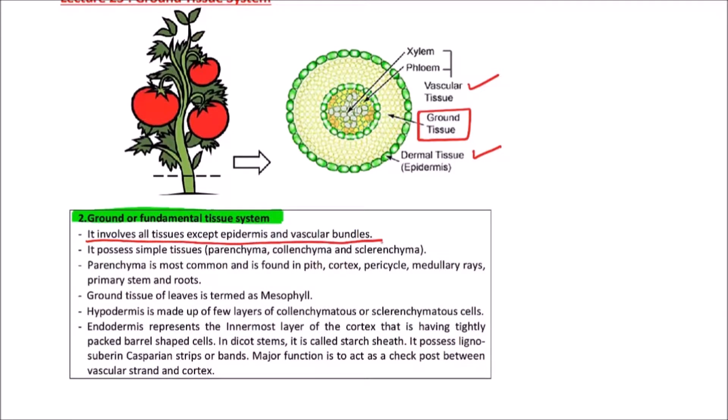It possesses simple tissues like parenchyma, collenchyma, and sclerenchyma. Parenchyma is most common and is found in pith, cortex, pericycle, medullary rays, primary stem, and the roots. Ground tissue of leaves is termed as mesophyll.